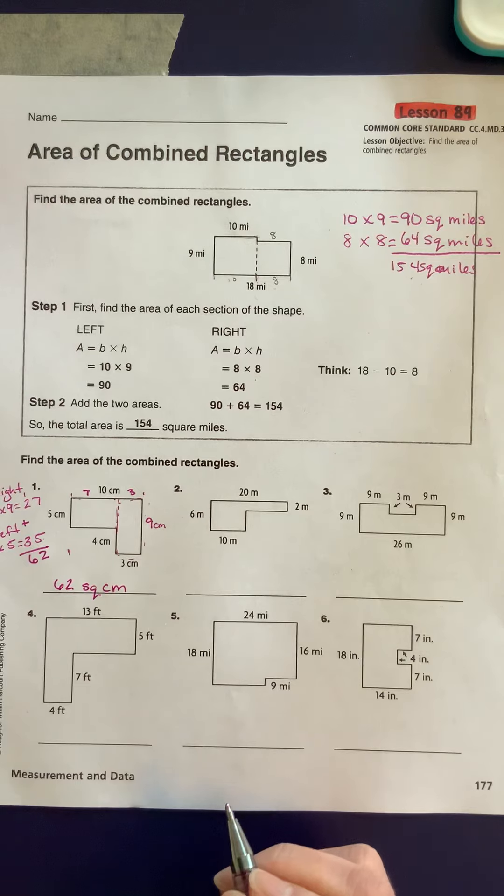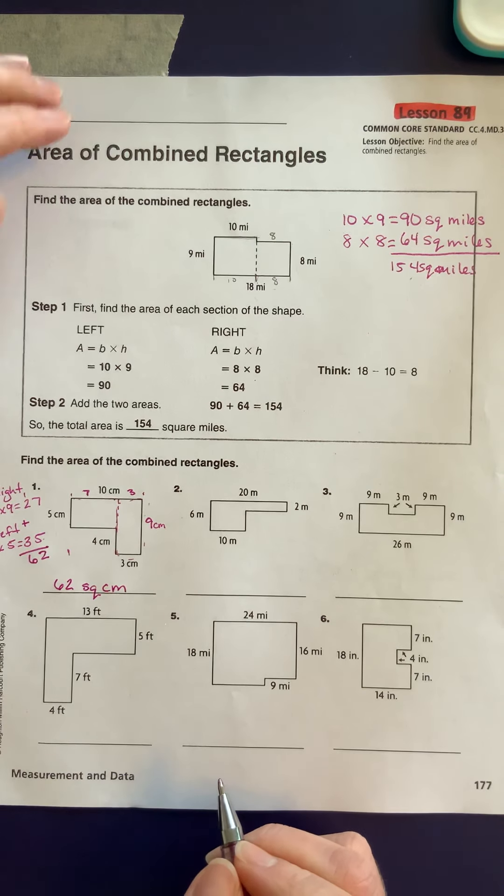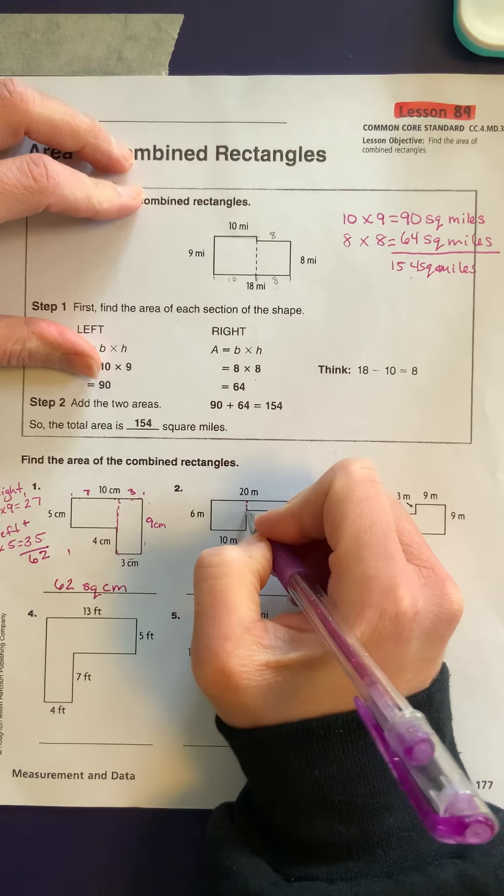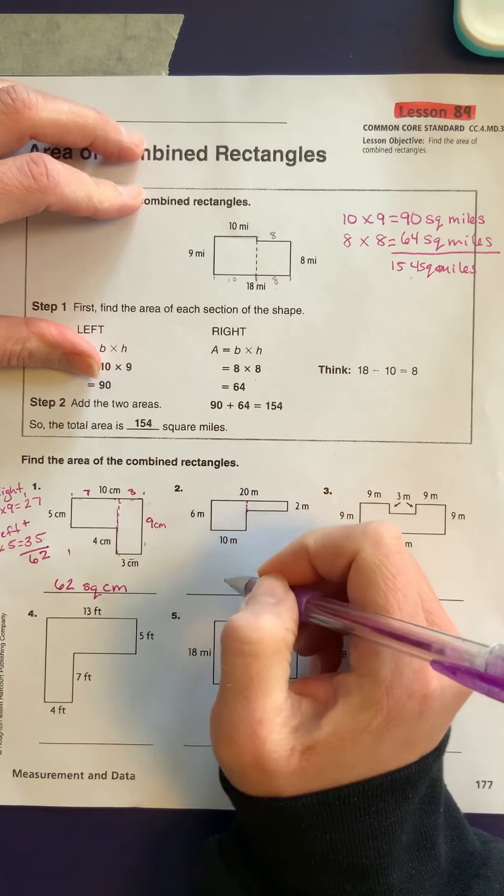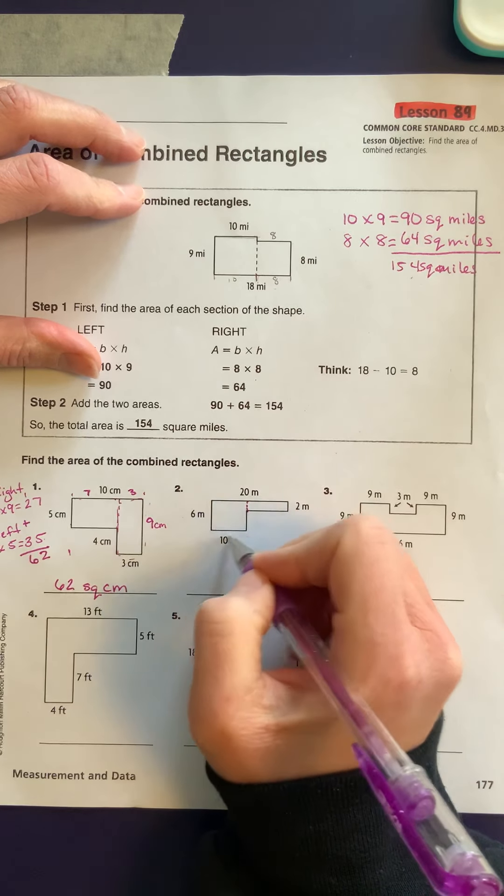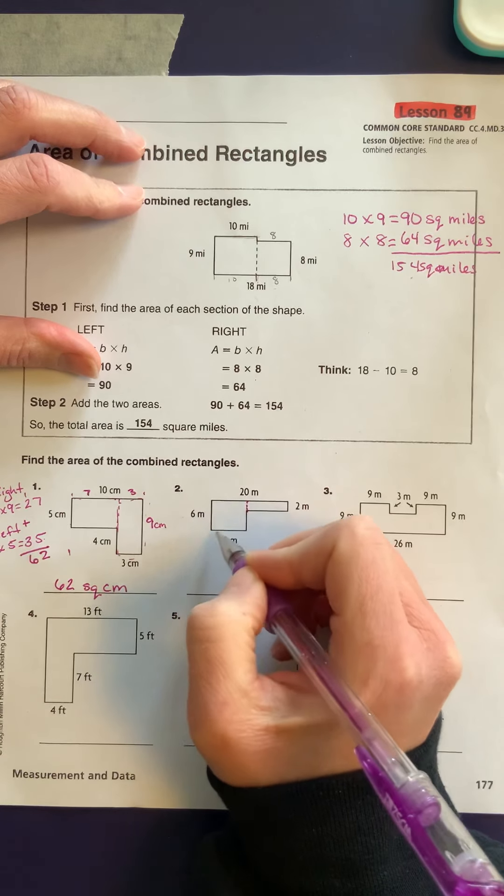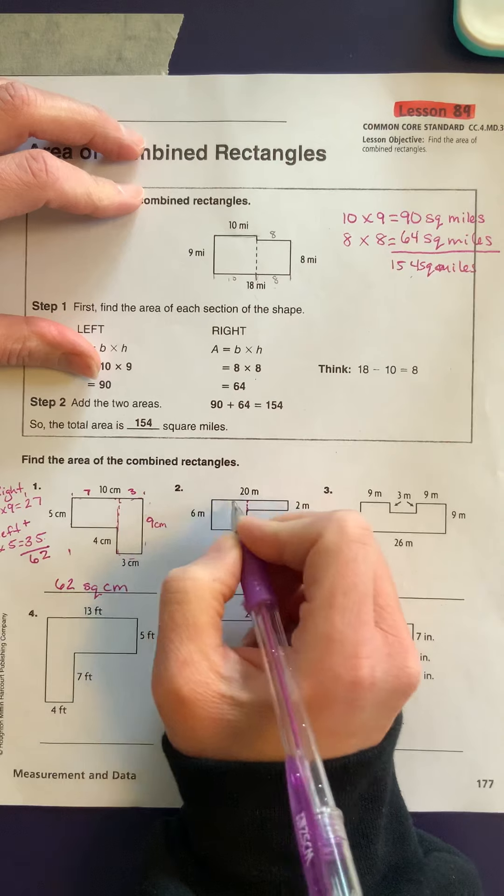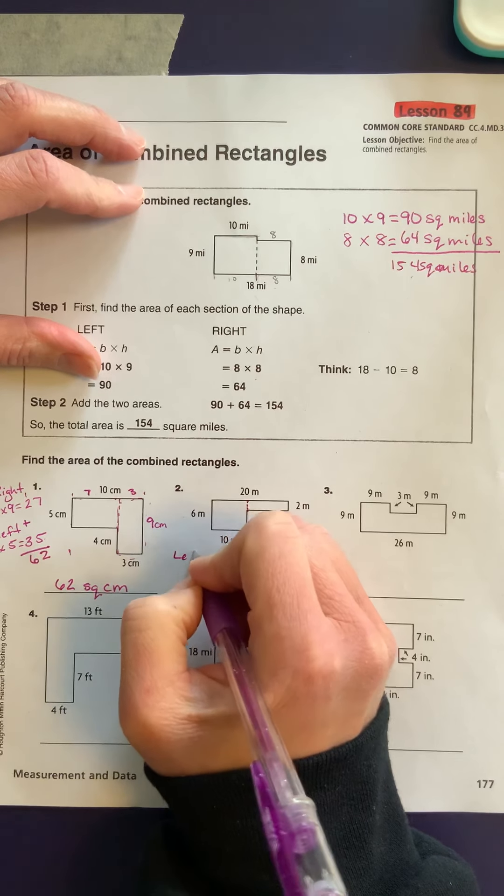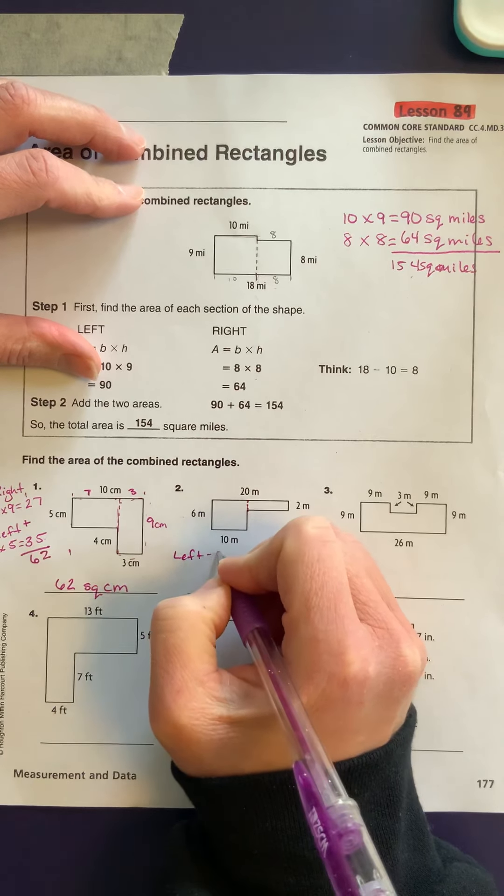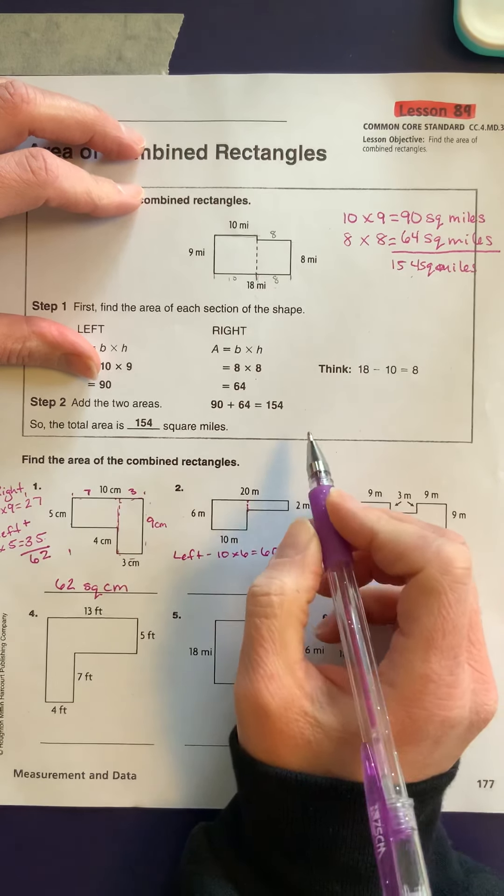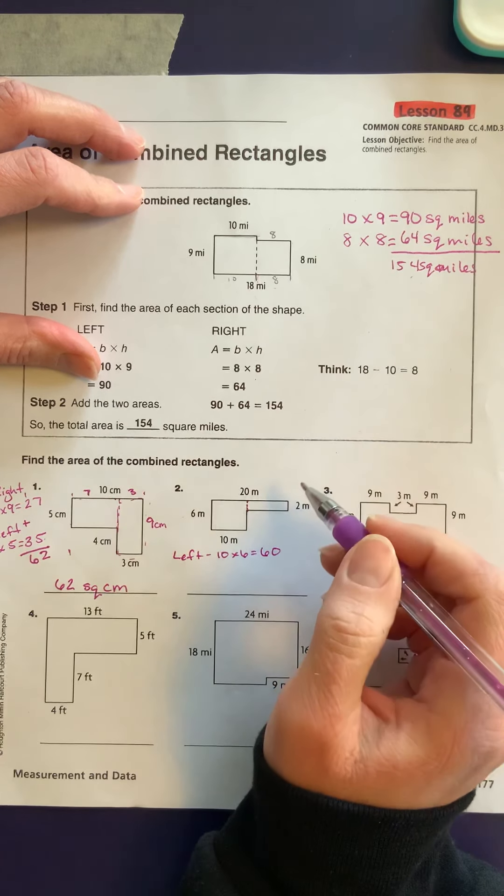Let's take a look at number 2. I'm going to separate right there. So my first one is going to be easy to do. It's going to be this 10 times 6, 10 times 6, and that is the rectangle on the left.